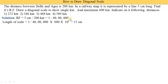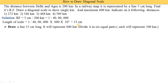Next, we find the length of scale. Length of scale equals RF multiplied by maximum distance. RF is 1 divided by (40 × 10^5), and the maximum distance is 600 kilometers. Since 1 kilometer equals 10^5 centimeters, we multiply 600 by 10^5. Calculating this gives 15 centimeters. So 15 centimeters represents 600 kilometers, and we draw a line that is 15 centimeters long.